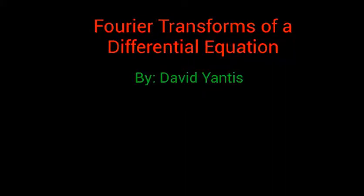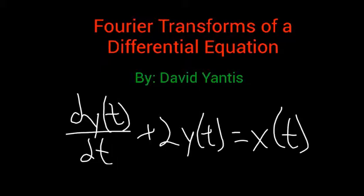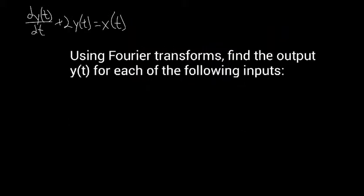Today I'm going to talk about how to use Fourier transforms to solve a differential equation. The equation I'm going to use today is dy/dt plus 2y(t) equals x(t). The question is, using Fourier transforms, find the output y(t) for each of the following inputs.